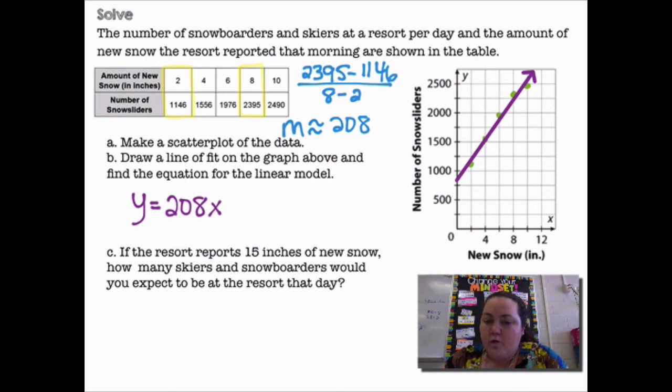So I need my y-intercept. That's b. If I go back to my scatter plot and I see where my line is crossing, it looks like it's about 825. We're just kind of estimating. So our line's not going to be exact. If we were using a graphing calculator or if we were using computer software, we could plug in each ordered pair and get the exact equation. But we're just kind of estimating for this.